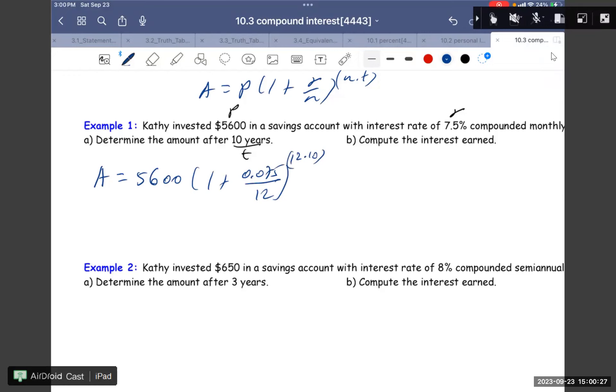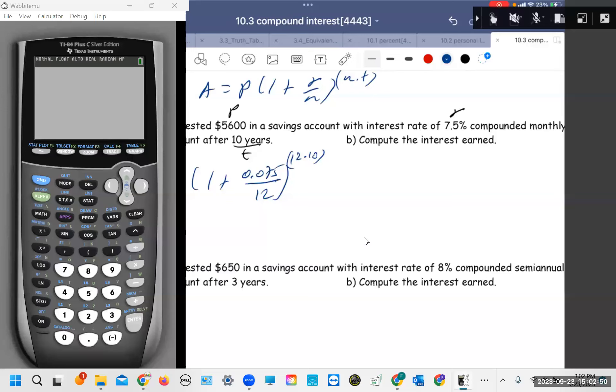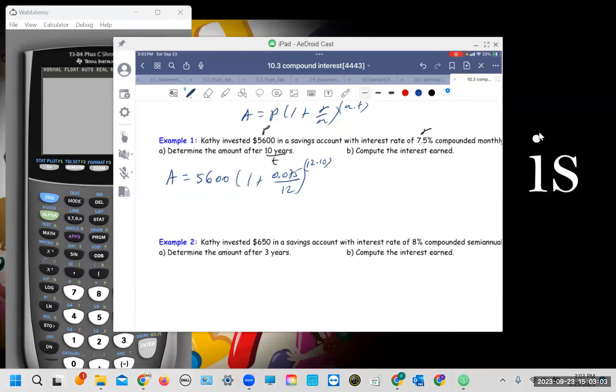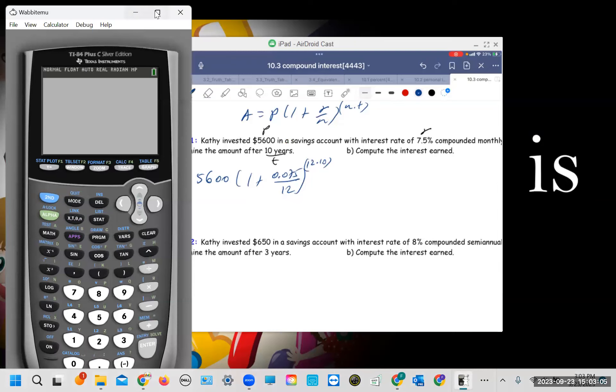So the formula A equals P(1 plus R/N) to the N times T. So we have the formula. This one is my P, this one is my R, and this one is my T. So I have A equals 5600 times (1 plus 0.075 over 12) to the power of (12 times 10). So this one, let me bring out my calculator.